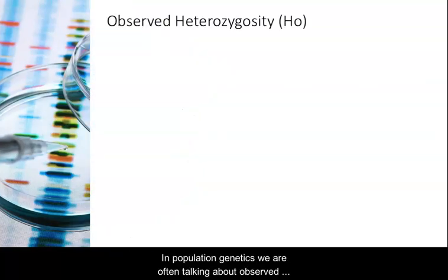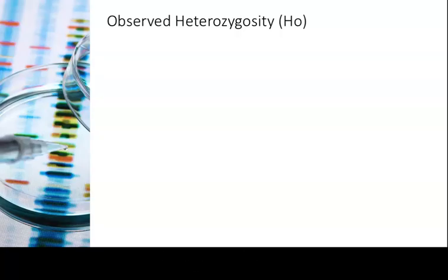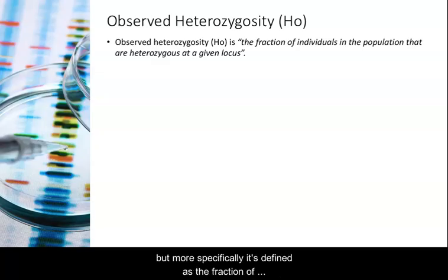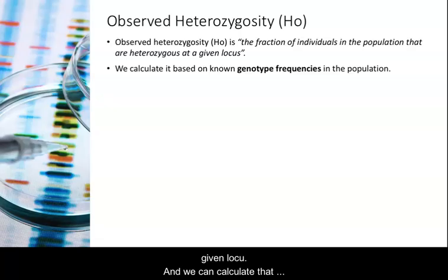In population genetics we are often talking about observed and expected heterozygosity. The observed heterozygosity is just that — the actual heterozygosity observed in the population — but more specifically it's defined as the fraction of individuals in the population that are heterozygous at a given locus, and we can calculate that based on the known genotype frequencies in the population.